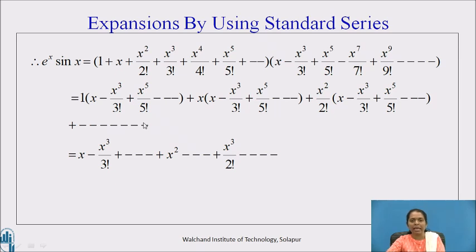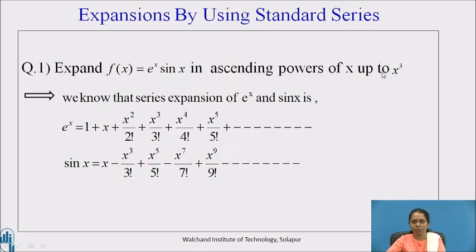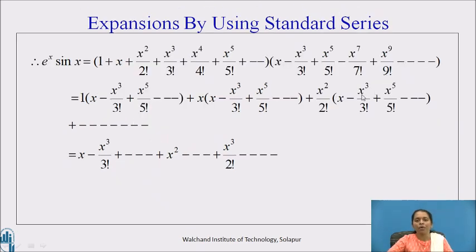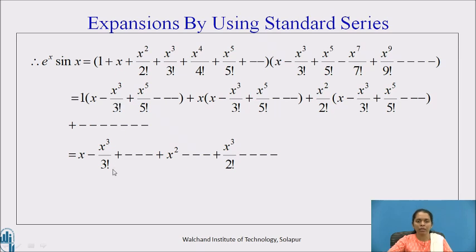Remember that in the question we need the expansion up to x³, so we can leave terms of degree higher than 4. I am not going to consider higher degree terms; instead, a dash sign is written. So, 1 into the second bracket gives terms up to x³: x minus x³/3!. From the second product, x into x gives x². From the third product, x²/2! into x gives x³/2!. For all other higher degree terms, dash dash dash.